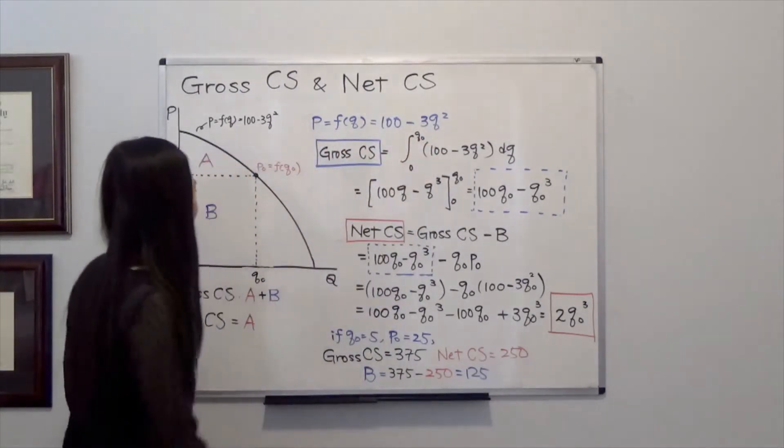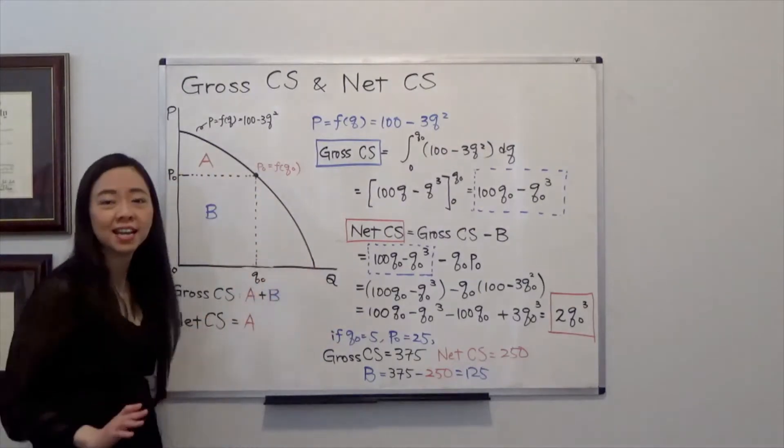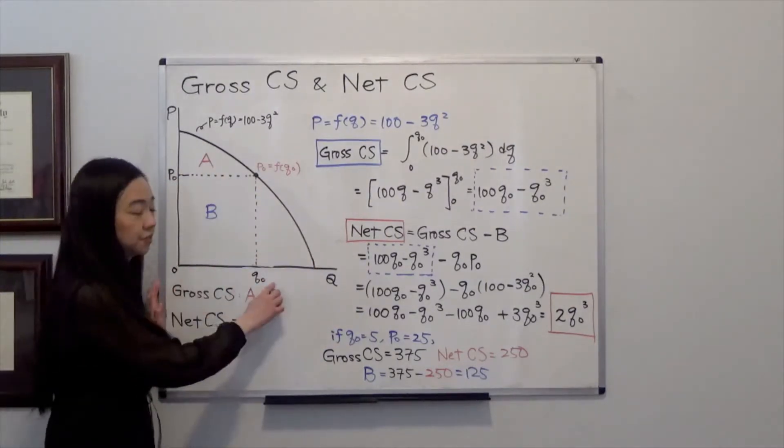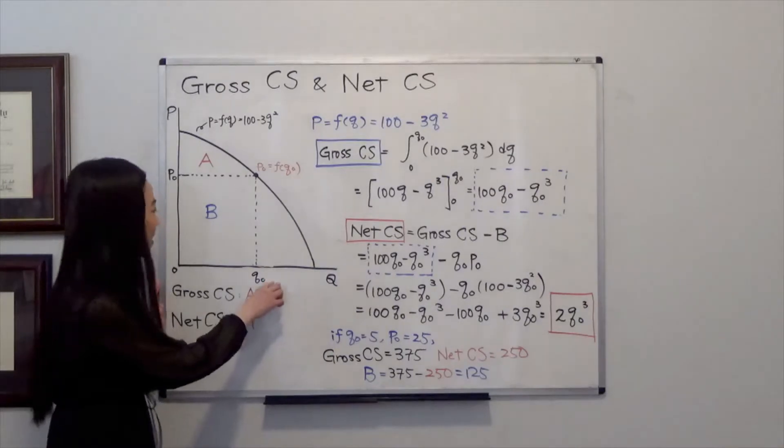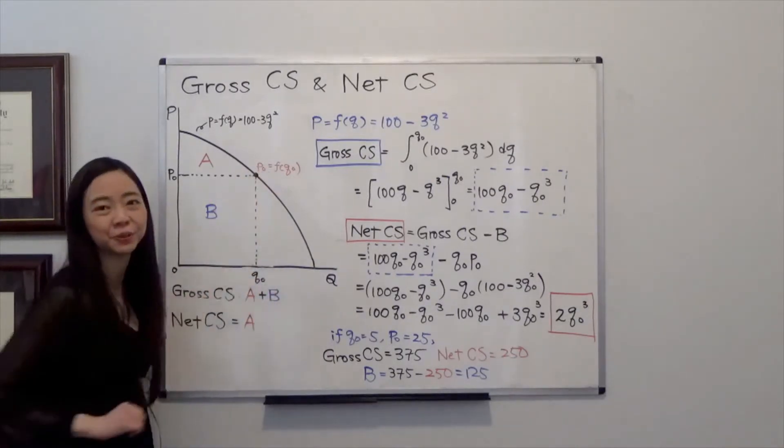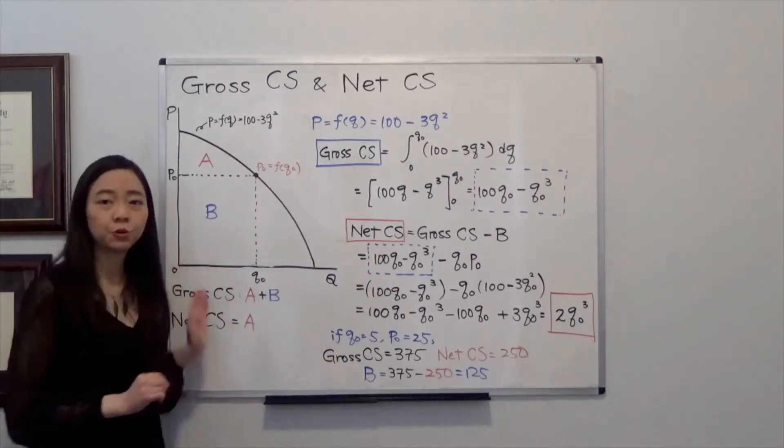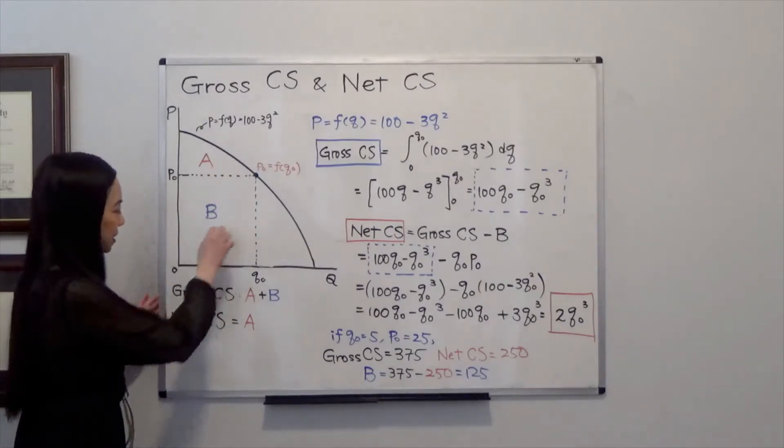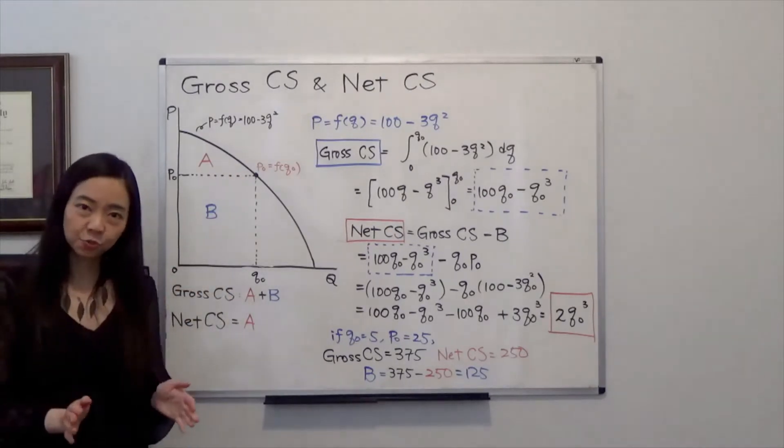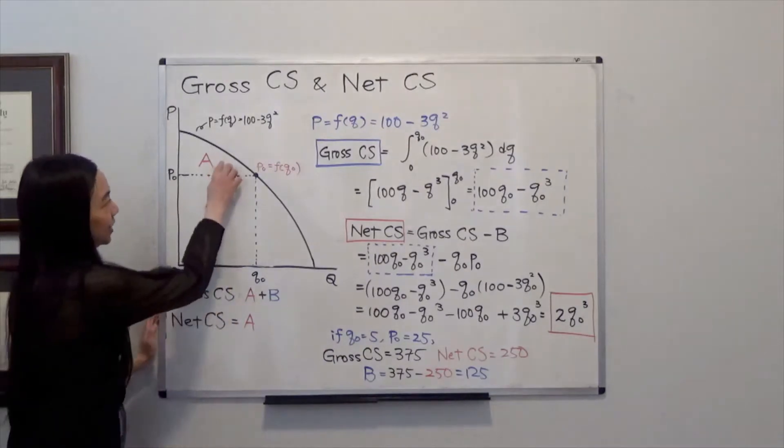So graphically, you can see that this is our demand curve, and we consume quantity Q0. Q0 is a number, so you're paying P0, and gross consumer surplus will be the area A plus B, whereas your net consumer surplus will be only area A.